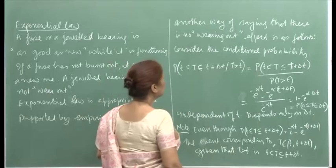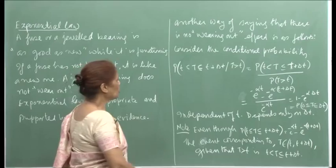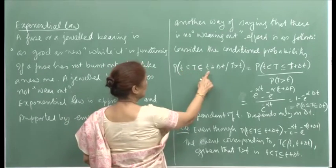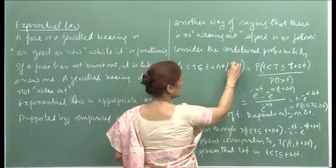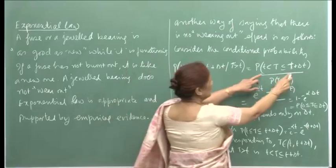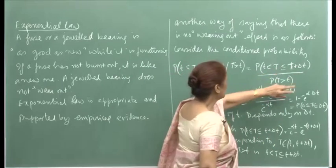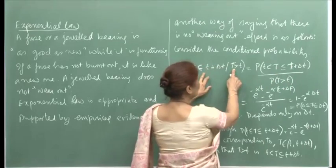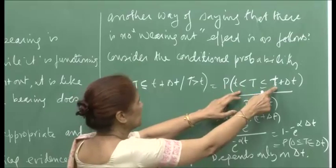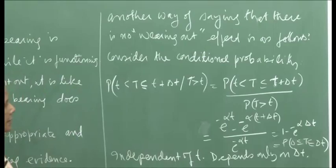Another way of saying there is no wearing out effect is as follows. Consider the conditional probability that capital T, the lifetime, lies between t and t plus delta T, given that capital T is greater than t. The intersection of these two events is simply T lying in that interval, because here also T is greater than t and it is less than t plus delta T. So the conditional probability can be written as the probability of the intersection divided by the probability that T is greater than t.